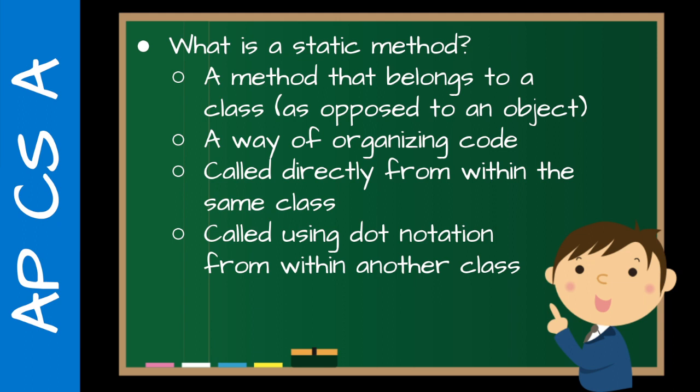A static method is either called directly from within the same class or called using dot notation from within another class. And again, we've seen this. We've seen math.sqrt, for example, would be an example of a static method that belongs to the class, in this case, math.